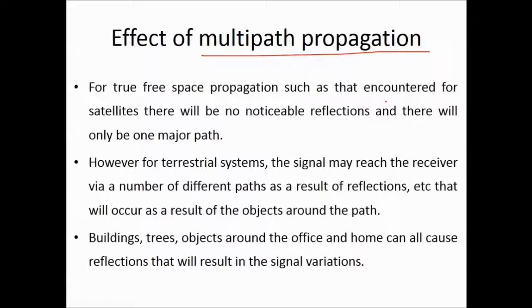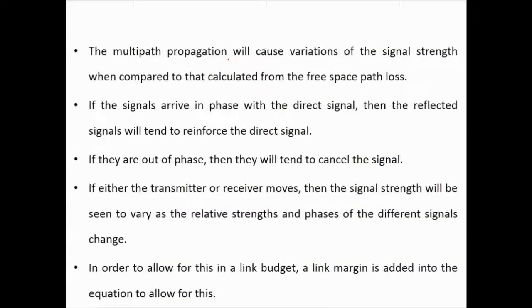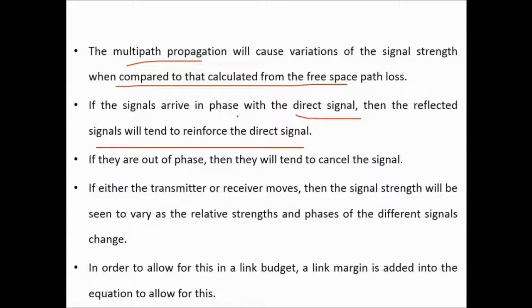For true free-space propagation such as satellite links, there will be no noticeable reflection and only one major path. However, for terrestrial systems, the signal may reach the receiver by a number of different paths after reflection from objects such as buildings, trees, and objects around the office or home. This multi-path propagation causes variation in signal strength compared to what is calculated from the free-space path loss. If reflected signals arrive in phase they reinforce the direct signal; if out of phase they cancel it. If either the transmitter or receiver moves, signal strength will vary as the relative strengths and phases change.